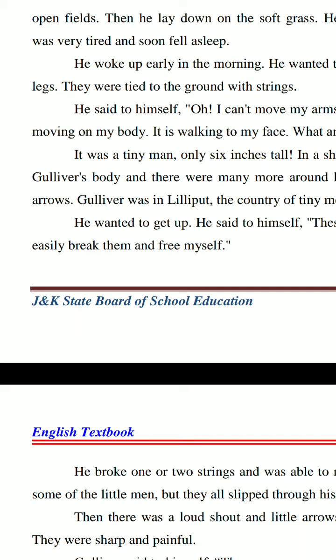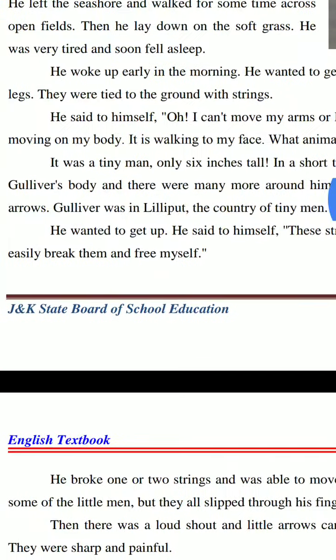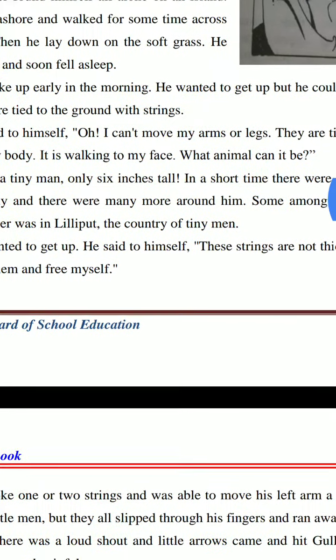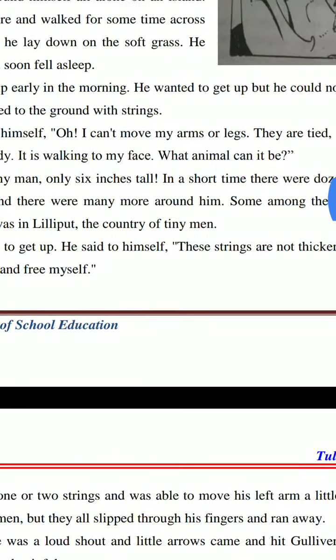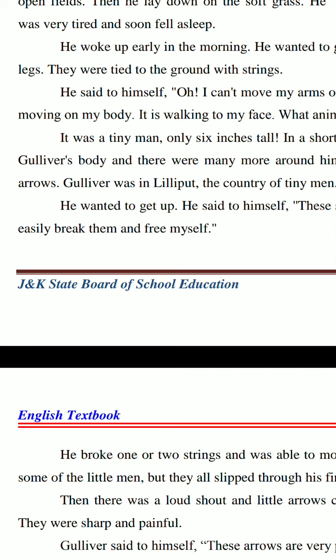وہ بولتا ہے کہ some animal is moving on my body — کچھ animal جیسا ہے جو میری body پہ چل رہا ہے، یہاں وہاں movement کر رہا ہے۔ It is walking to my face — یہ میرے چہرے کی طرف آ رہا ہے۔ What animal can you be? It was a tiny man — only six inches tall، مطلب بہت بہت چھوٹا ہوتا ہے۔ In a short time there were dozens of tiny men on Gulliver's body۔